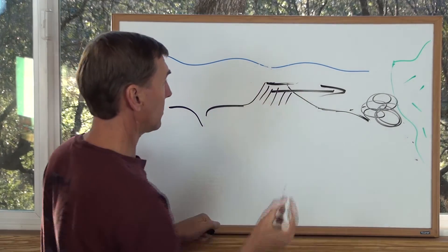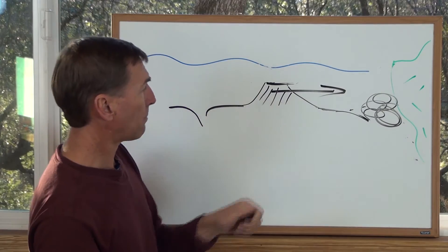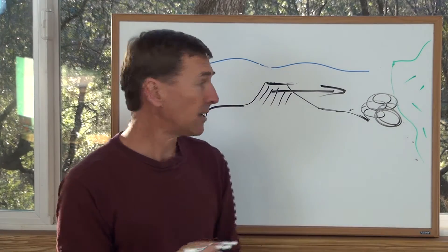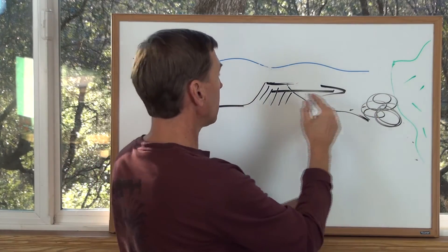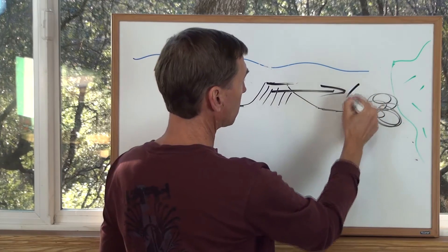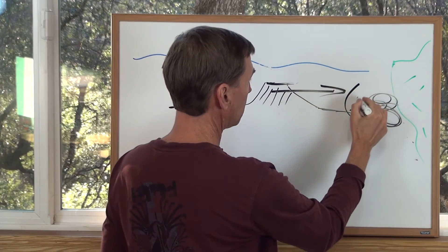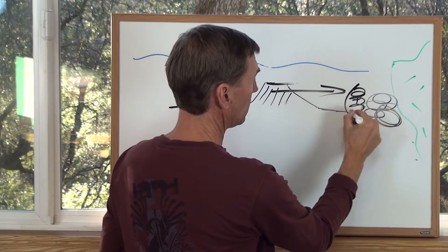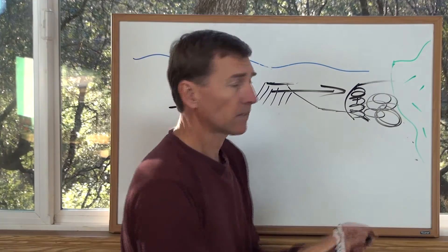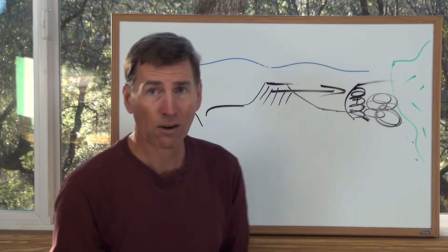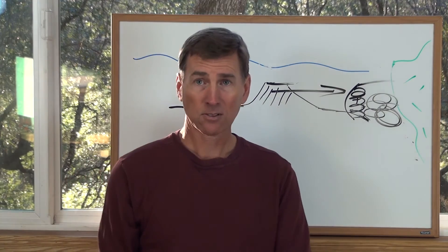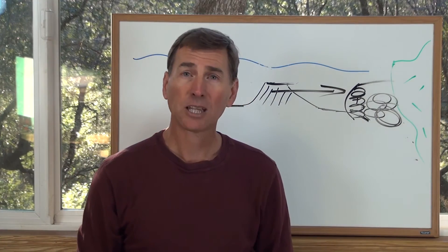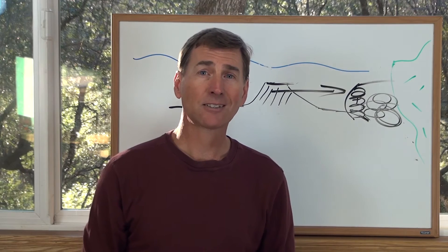Eventually the waves are going to start to cut the top off and it's going to erode. But nevertheless this massive amount of land is going to be added to the edge of the continent. And so now we have sediments and we have volcanic island arcs, and there can be other land masses.